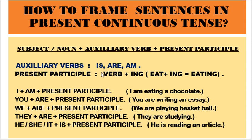Now let's see which auxiliary verb goes with which subject. With 'I', we have to use 'am': I am + present participle, so 'I am eating a chocolate' or 'I am writing an essay'. With 'you', we use 'are': 'You are writing an essay'. With 'we' and 'they', we also use 'are': 'We are playing basketball', 'They are studying'. With 'he', 'she', 'it' — third person singular — we use 'is': 'He is reading an article', 'She is reading an article'.